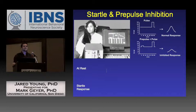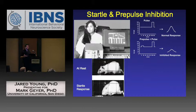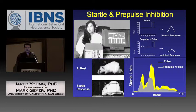Startle and pre-pulse inhibition is primary work that Mark is perhaps best known for. In humans, startle is measured using an EMG electrode attached to the eye muscle, with loud 110-decibel pulses. Adding a pre-pulse before the loud stimulus inhibits the response — that's pre-pulse inhibition. The same measurement can be done in rodents using an accelerometer in a paradigm measuring whole-body contraction, and most of Mark's high-cited publications come from this work.